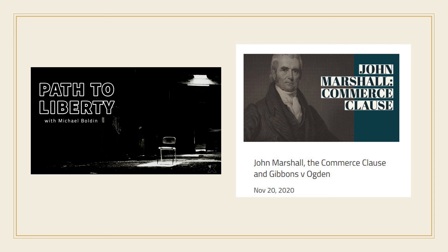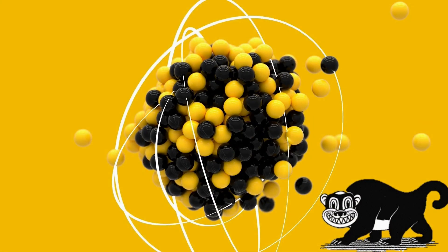The Commerce Clause operates as both a grant of power delegated to Congress and a constraint upon state legislation. There is no clause in the 1787 Constitution that has been more disputed, and none has generated nearly as many cases.